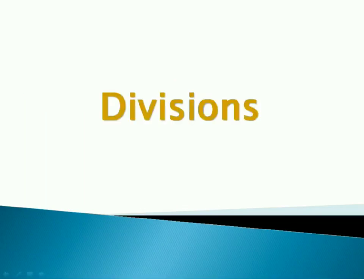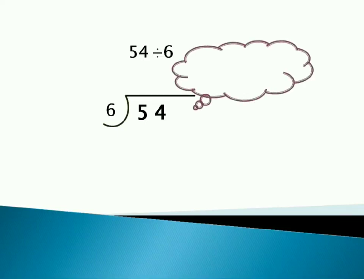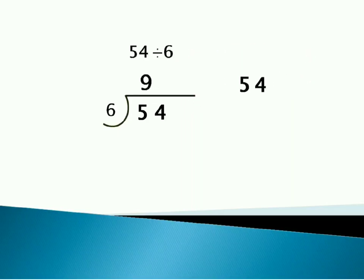So the last operation is division. Let's start with a simple example. 54 divided by 6. So we write like this. For this you should know the table of 6. 6 nines are 54. Answer is 9 and we will minus 54 minus 54. That is 0. So the remainder is 0 and answer is 9.